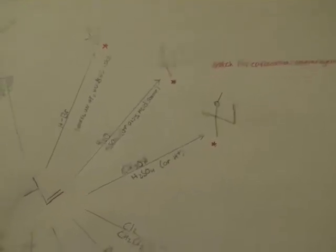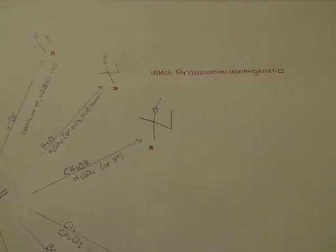And here is a review of your basic reactions of alkenes. The ones with red stars by them are ones for which you have to watch out for carbocation rearrangements.